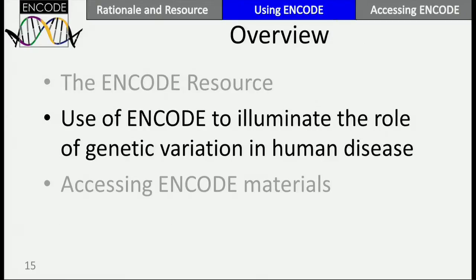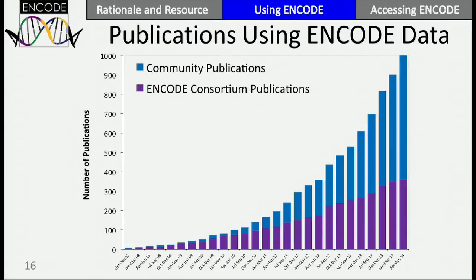Now I'd like to turn to how you can use genetic variation to understand phenotype by adding in ENCODE data. I'll start with publications on ENCODE data. The blue bars are community publications — publications that have used ENCODE data without ENCODE funding. This is what the project is for, and this is evidence that the project is being widely used in research today. Over 600 publications, for example, have used human or mouse ENCODE data, a large number studying human disease. The most commonly studied disease using ENCODE data is cancer.